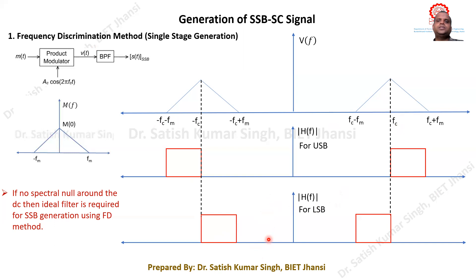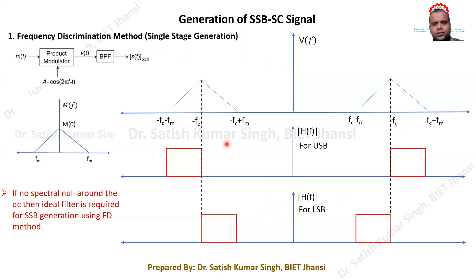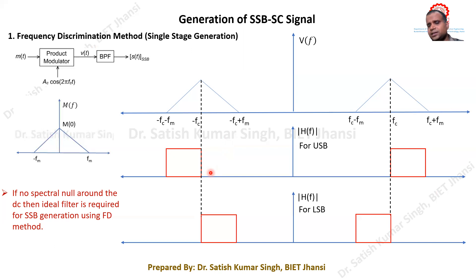When we have any DSB-SC signal and want to generate the SSB-SC signal using the frequency discrimination method, we need an appropriate band-pass filter with a certain passband. Depending on the type of signal, we pass it through the appropriate BPF to get the SSB-SC signal. The passband of the BPF determines whether we get a USB or LSB modulated signal.